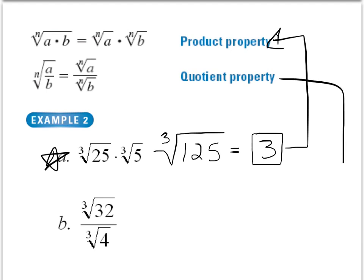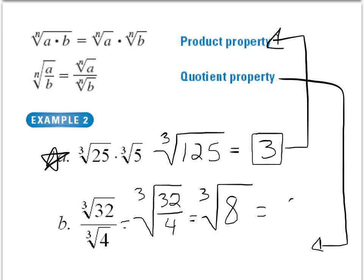Now, the quotient property tells us that, once again, if we have a fraction, we can either split them up or combine them. Here they're already split up. So what I want to do is I want to combine these into one fraction because we're going to see that 32 over 4 equals 8. And I know that 8 has a perfect cube root of 2. This is an example of the product property and the quotient property.